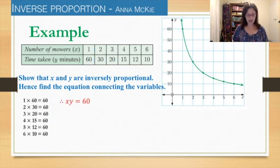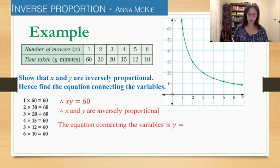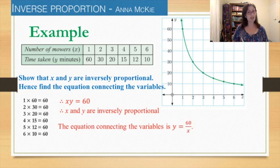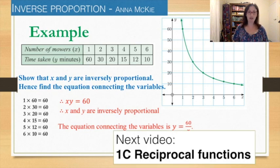And therefore the equation connecting them will be x times y is equal to 60. We say that they are inversely proportional and therefore the equation connecting them is, so the equation in terms of y is you do some rearranging, 60 divided by x. And so that's the equation of that graph and of these variables.